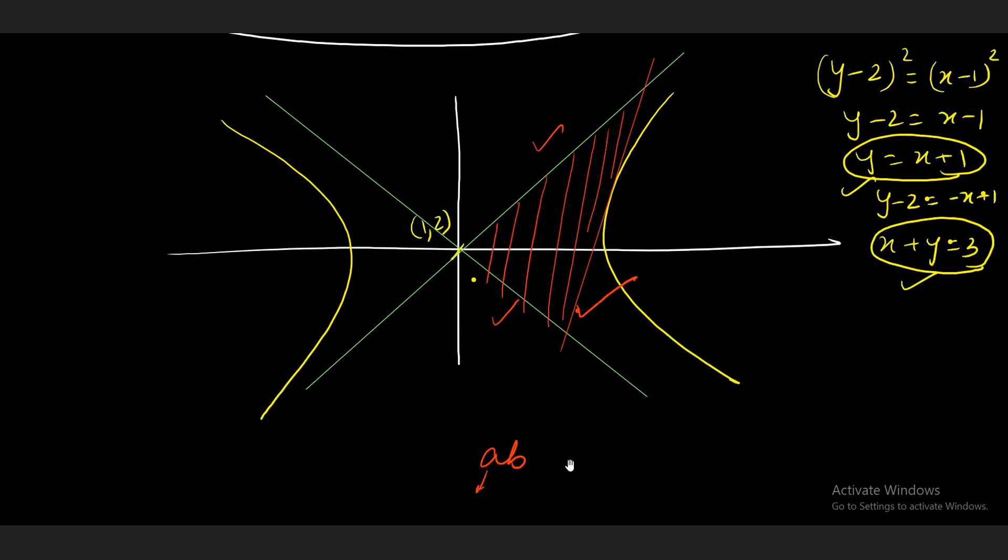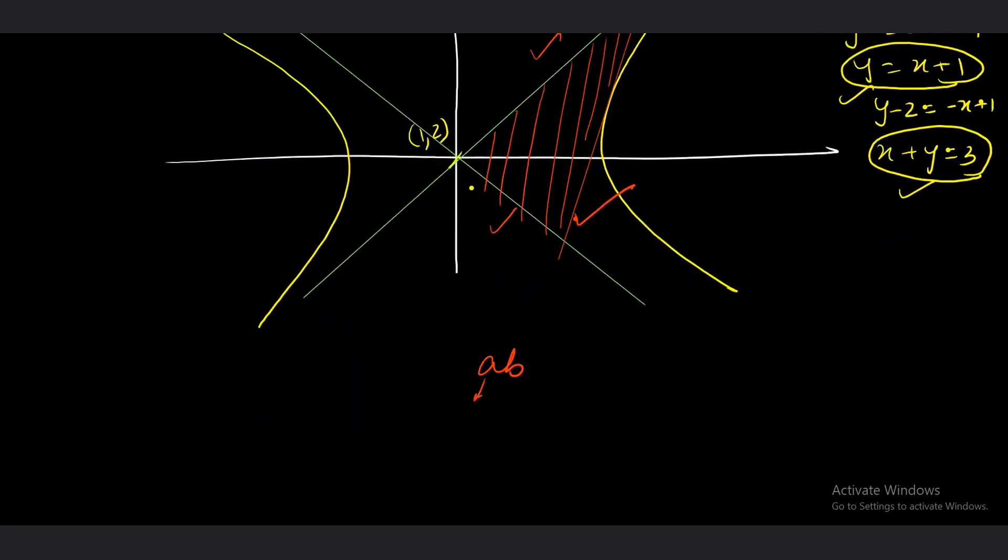And the area turns out to be equals to AB. What do you mean by AB? A is nothing but half the length of transverse axis. B is half the length of conjugate axis. That is, when you have (x^2/a^2) - (y^2/b^2) equals 1 hyperbola, then answer becomes AB.